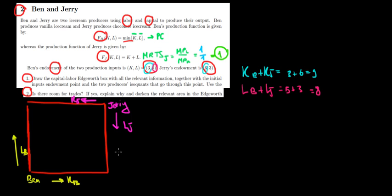Let's draw the Edgeworth box — nine units of capital total, eight units of labor total. Now we plot the endowment point. For Ben, that's three units of capital and five units of labor, which we mark on the box. This same point is also the endowment point for Jerry, who has the remaining six units of capital and three units of labor.